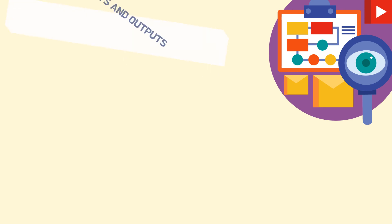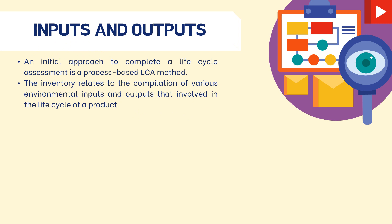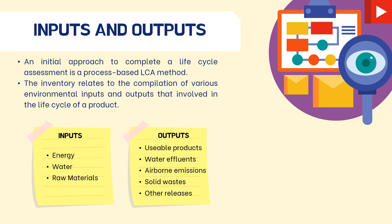Lastly, I will explain inputs and outputs. An initial approach to complete a life cycle assessment is a process-based LCA method. In a process-based LCA, the itemization of inputs and outputs is important for a given step in producing a product. The inventory relates to the compilation of various environmental inputs and outputs involved in the life cycle of a product. Examples of inputs include energy, water, and raw materials, while examples of outputs include usable products, water effluents, airborne emissions, solid wastes, and other releases.